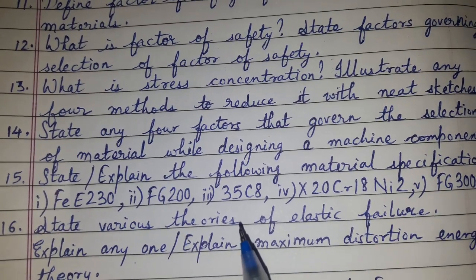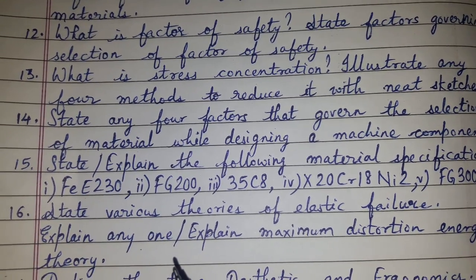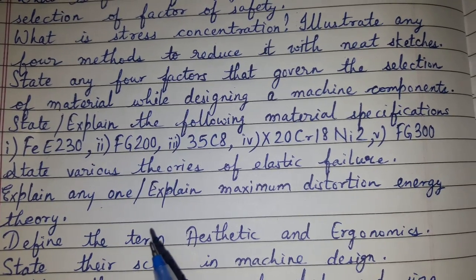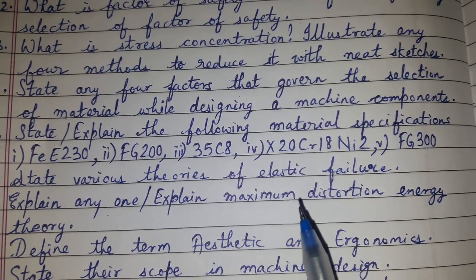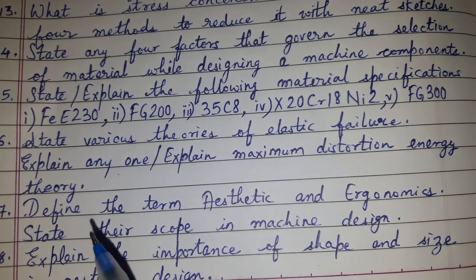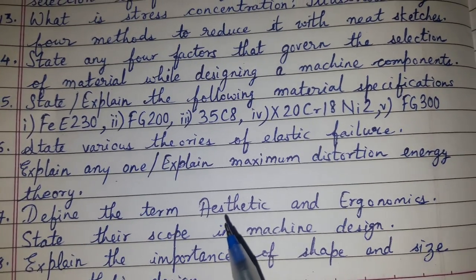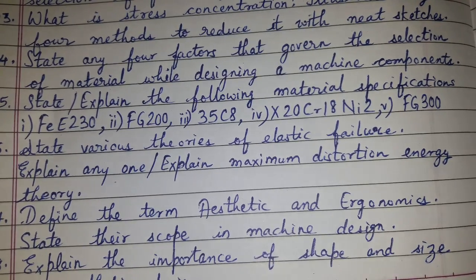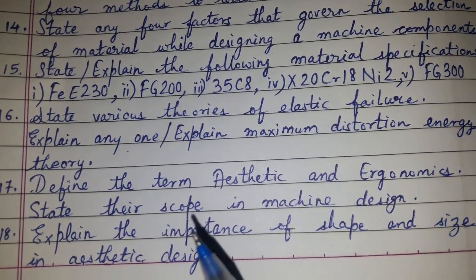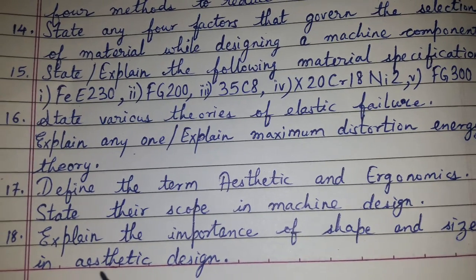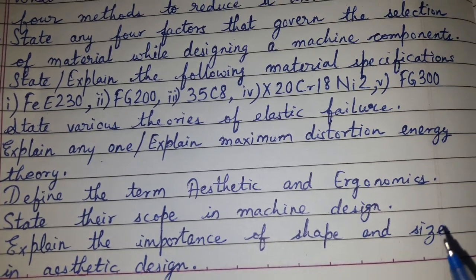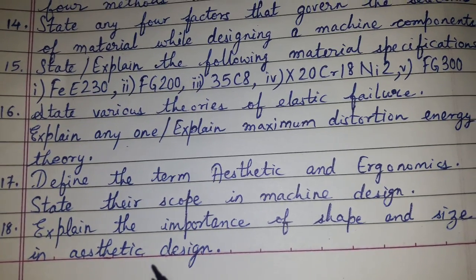Question number sixteen: state various theories of elastic failure and explain any one, or it may be asked for a specific theory like explain the maximum distortion energy theory. Question number seventeen: define the terms aesthetics and ergonomics, and state their scope or importance in machine design. Question number eighteen: explain the importance of shape and size in aesthetic design.